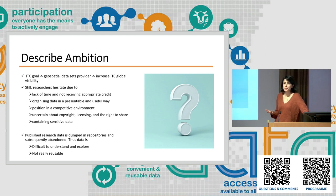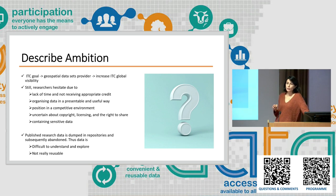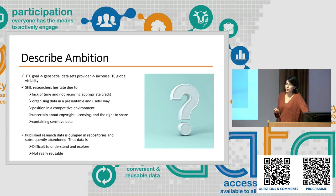Despite all the efforts made so far and the support people have received to publish their data, researchers still hesitate to publish because of lack of time, or they don't know how to organize their data in a useful way, or some are worried about their position in a competitive environment. They are not sure about copyright issues, the license they have to use, or whether they have the right to share data. Sometimes their data contains sensitive information.